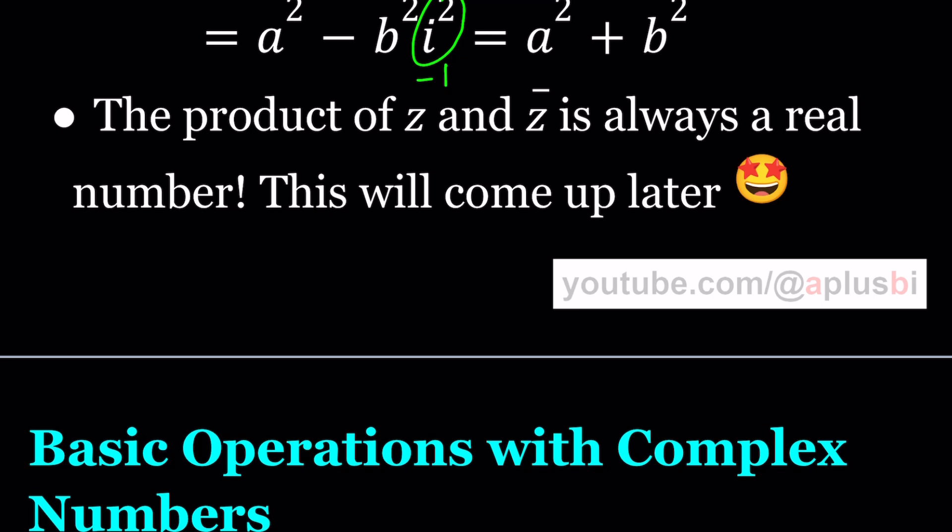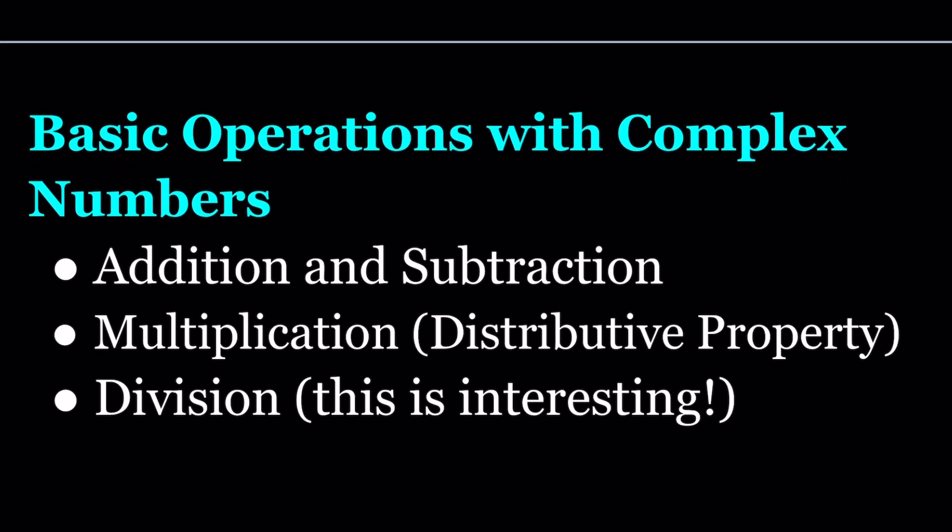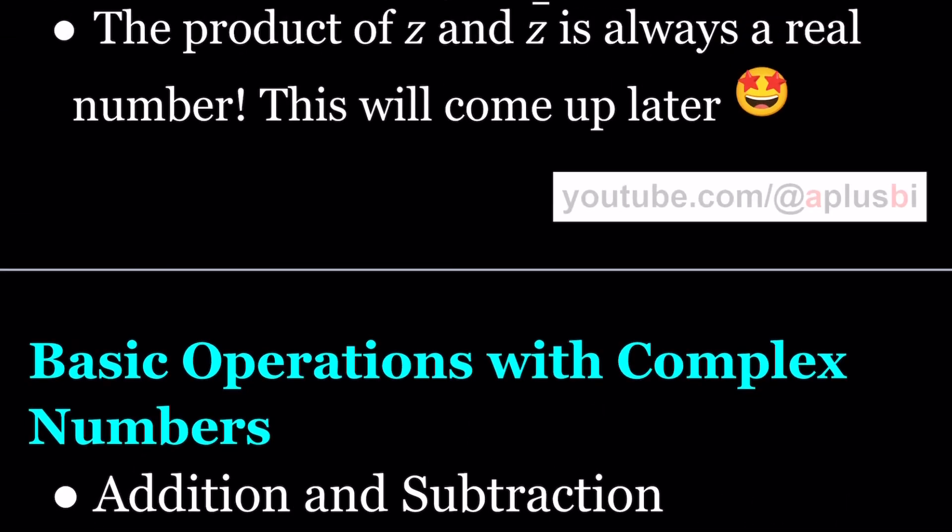The product of Z and Z bar is always a real number. And now we're going to talk about some basic operations. Since we kind of have an idea. Oh, by the way, I said A plus B i is a complex number, but I didn't give you any examples. So I should give you some examples.